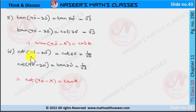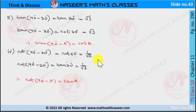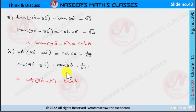For the fourth relation, cot(90° - a) = tan(a): if a = 30°, then cot(90° - a) = cot(90° - 30°) = cot(60°). We already know cot(60°) = 1/√3. By complementary angles, cot(90° - a) = tan(a), so cot(90° - 30°) = tan(30°). We already know tan(30°) = 1/√3.